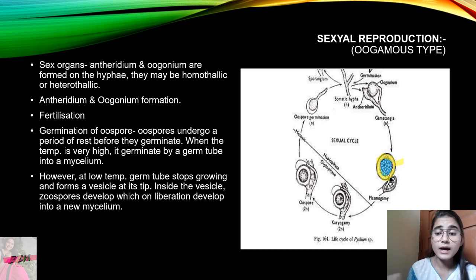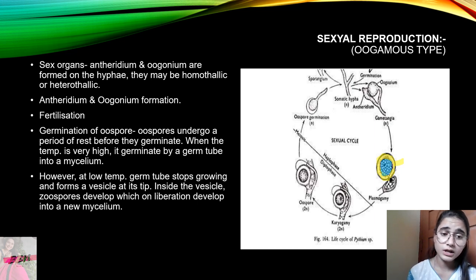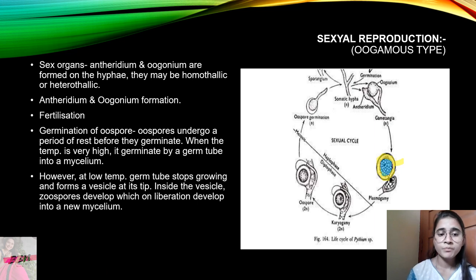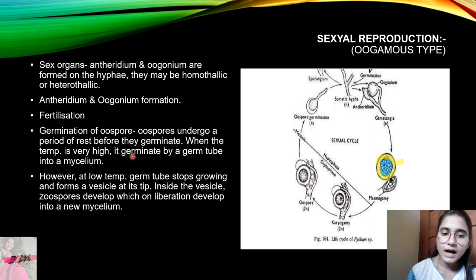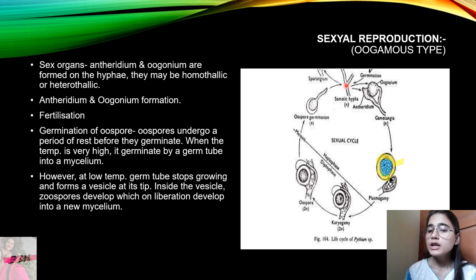The male nucleus passes through a fertilization tube and fuses with the female gamete. This fusion of male and female gametes results in the formation of a zygote, and the zygote develops into an oospore. The oospore undergoes a period of rest before germinating. At high temperature, the oospore germinates by a germ tube into a new mycelium.